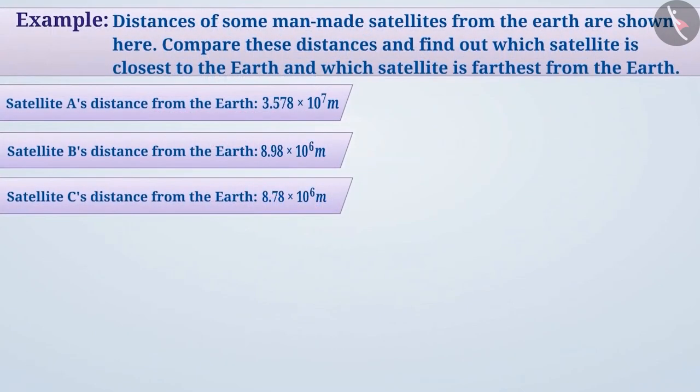Therefore, the capacity of the water tank can be shown as 5.5 × 10 to the power of 4 litres. Next example: distances of some man-made satellites from the earth are shown here. Compare these distances and find out which satellite is closest to the earth and which satellite is farthest from the earth.